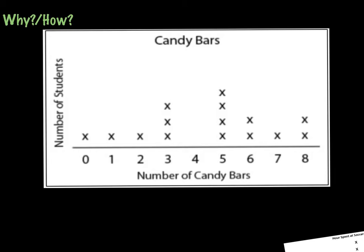Or which students had the least number of candy bars? That would be the person that had 0, right? We had 1 student that had 0 candy bars, 1 student that had 1, and 2 students that had 2.